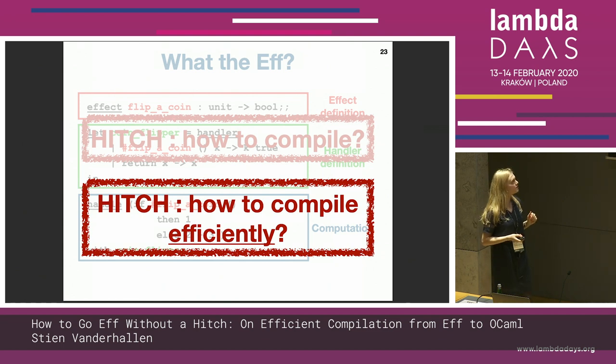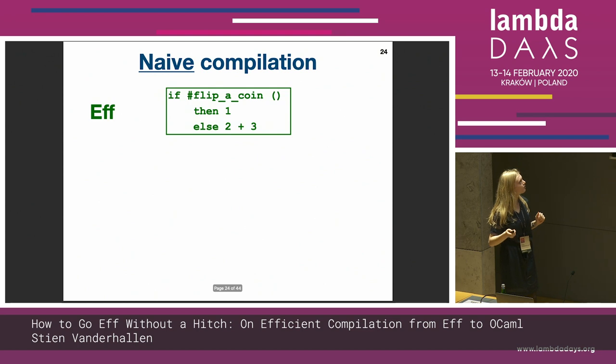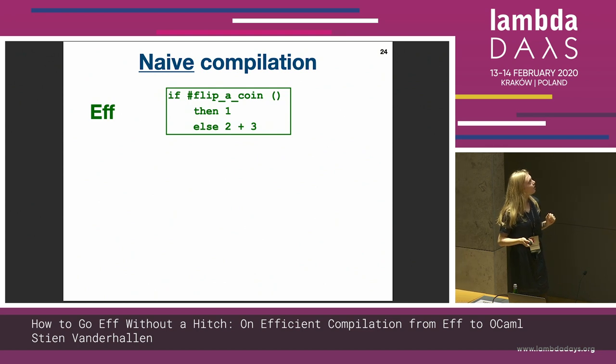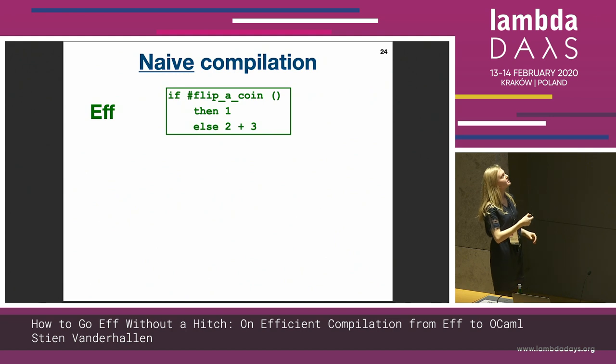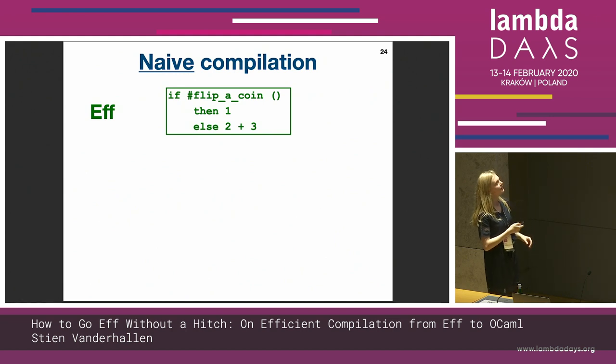How do we get this effectful program with the handler to a more low-level, for example OCaml, program? And of course how do we do this efficiently? A very naive approach is taking the if-then-else statement we just had in F, where we also used the handler that looks at this computation and handles it.